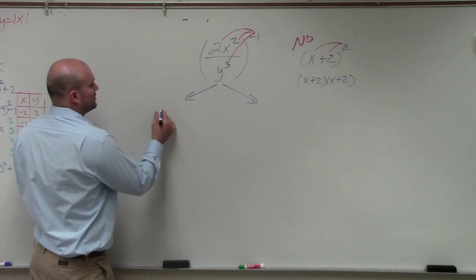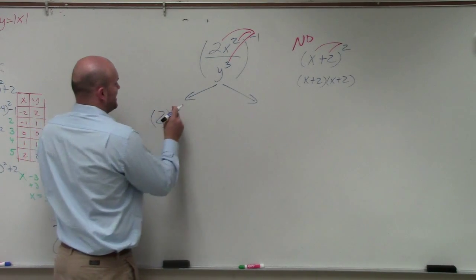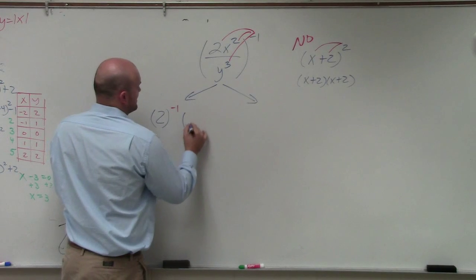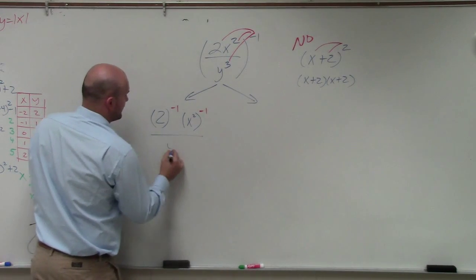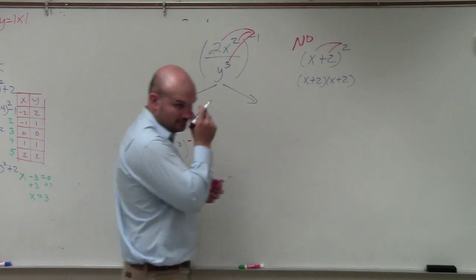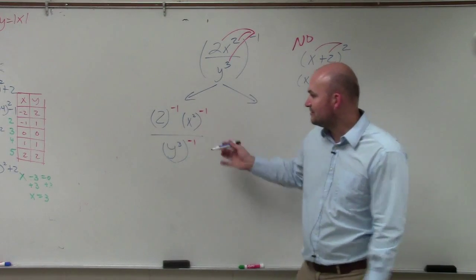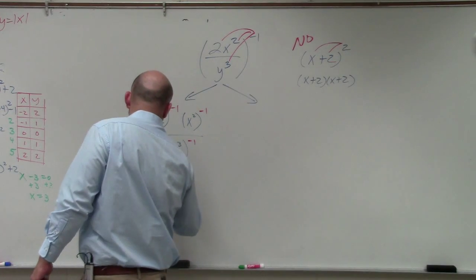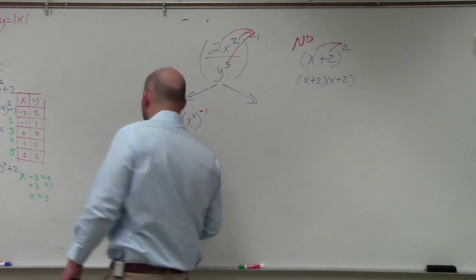So if you were to rewrite this, it would be 2 raised to the negative first times x squared raised to the negative first over y cubed raised to the negative first. Then, as I go ahead and do this, I can simplify this into 2 to the negative first, x to the negative second, divided by y to the negative third.